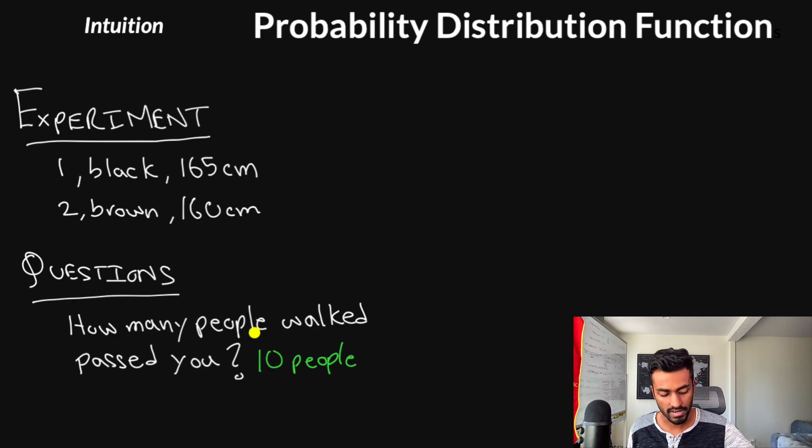And this measurable quantity is kind of the value of what we call a random variable. I have an entire video that discusses random variables more in detail, but just note that we're going to denote a random variable here for the number of people that walk past us with the capital X. And in this specific case, X will take on a value of 10. Random variables help quantify the outcome of an experiment. In this case, I saw 10 people, but had I conducted another experiment, I might have seen, I don't know, 8 people, or 7 people, or 11 people. And how these numbers behave, like what is the probability of seeing each of these numbers, we can actually represent with a probability distribution function.